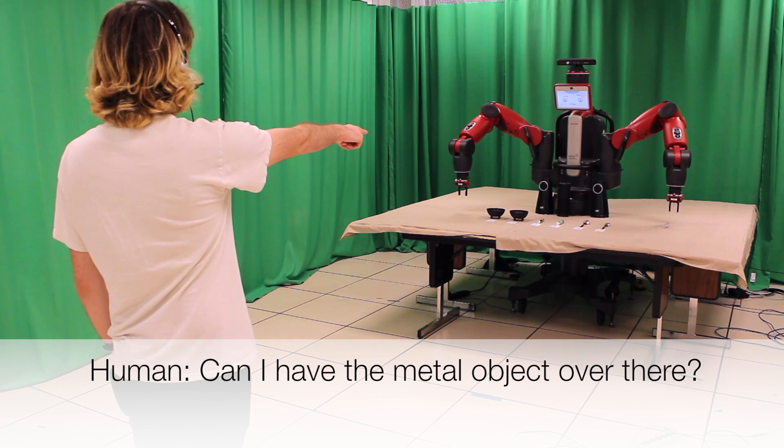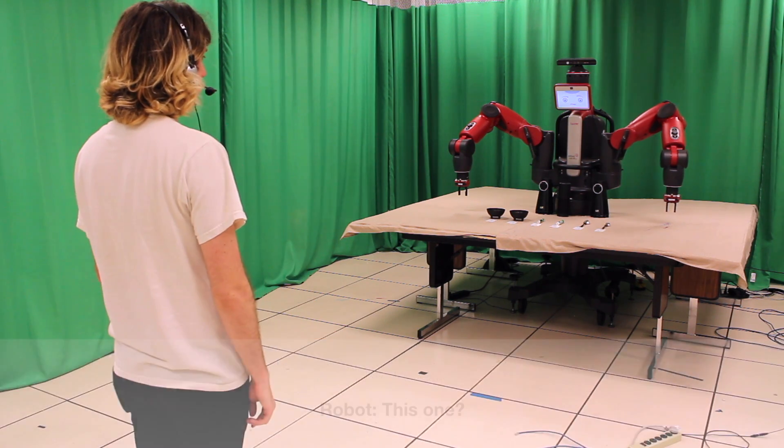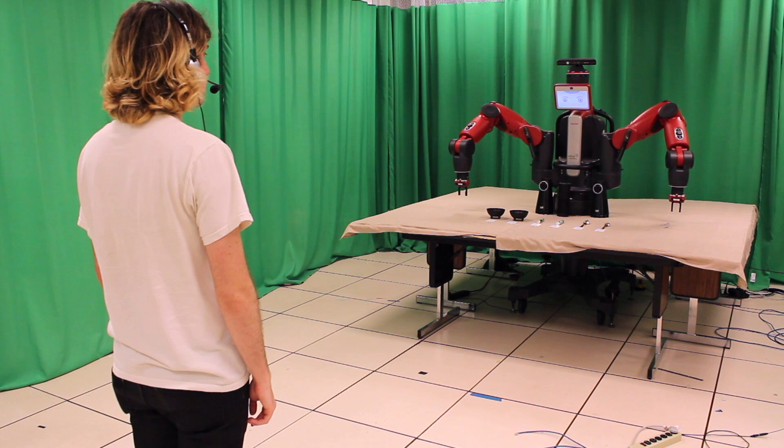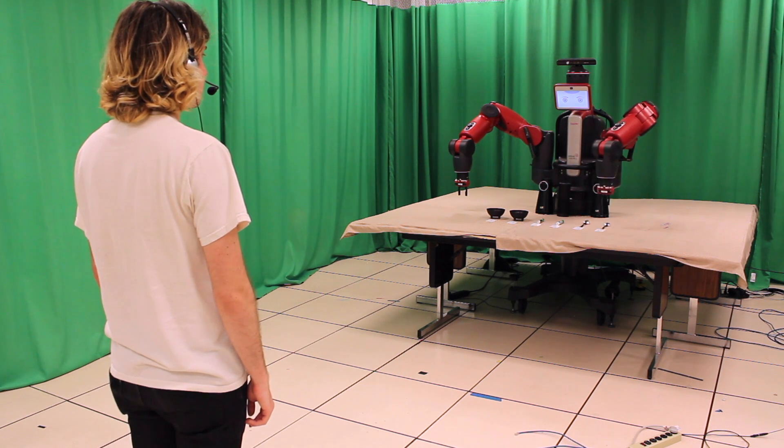Can I have the metal object over there? This one? No, the other spoon. Final answer. You wanted object six.